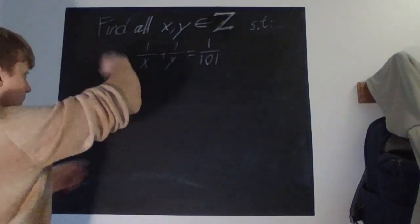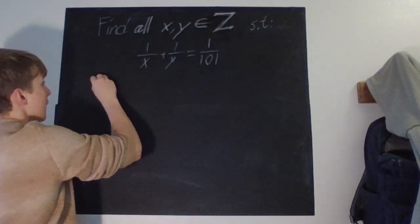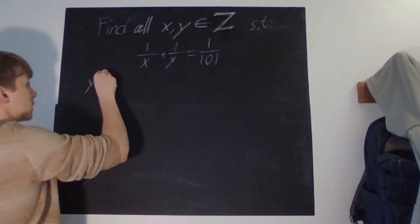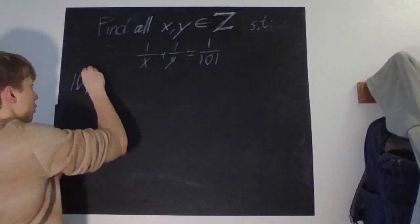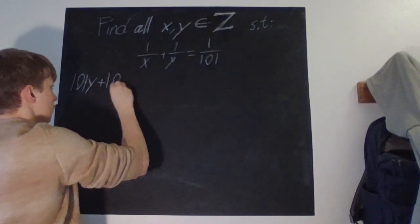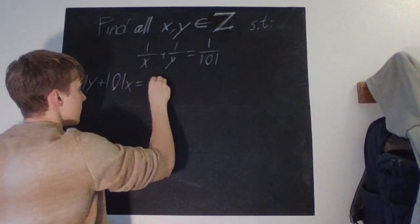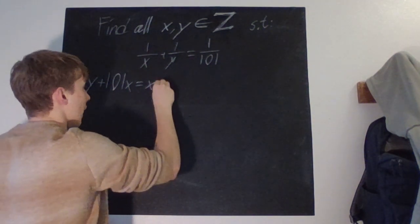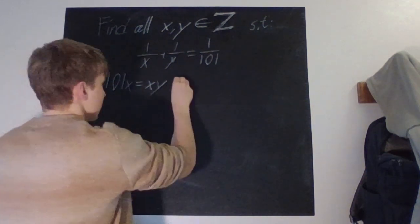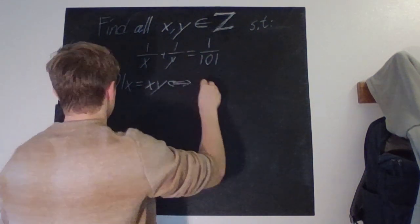Then we'll have that 101y + 101x is equal to xy and we just move things to the left-hand side.